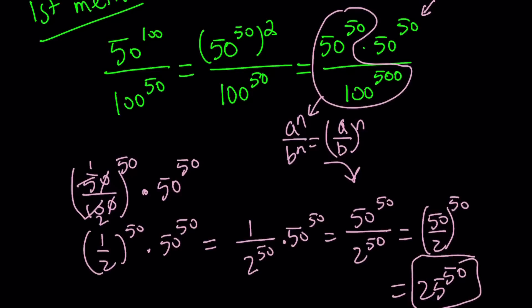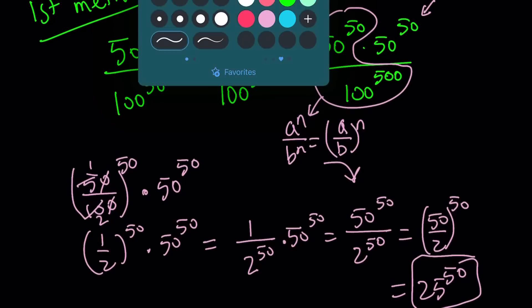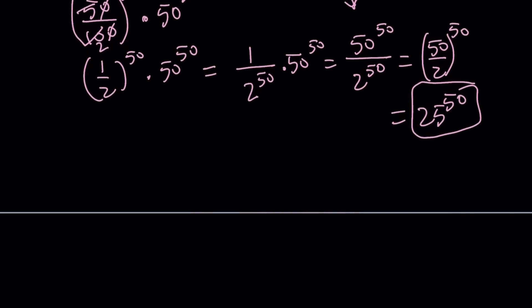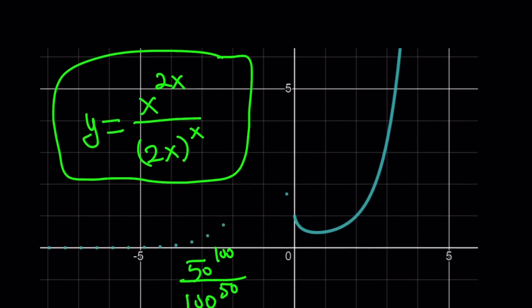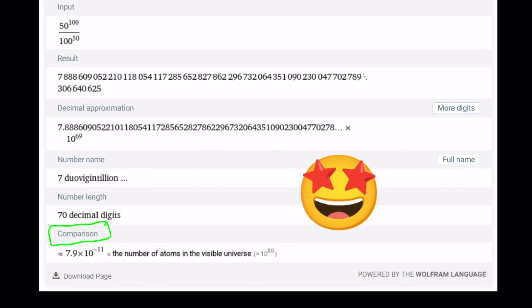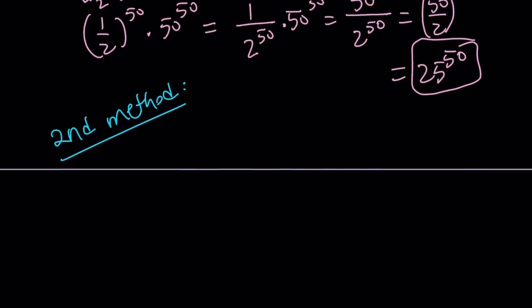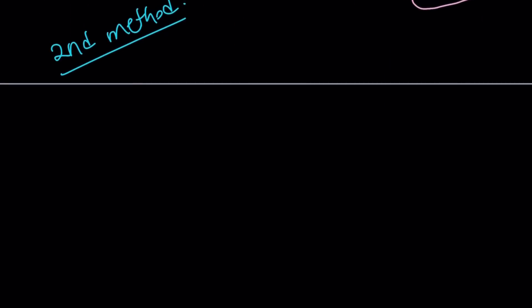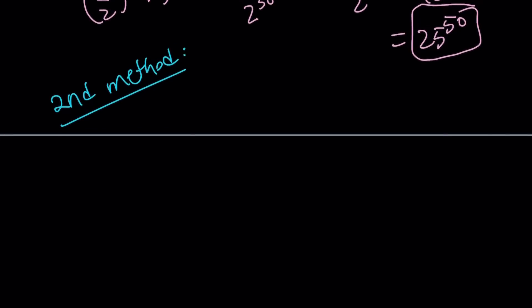But don't leave yet because we're going to do the second method. And we're also going to talk about the general formula or the function whose graph you've seen. And if you haven't seen it, this is the graph. This is the Wolfram Alpha result, which is kind of cool. Like the result is about 7 duovigintillion. And this also tells you that the numerator is larger, because you got a number greater than 1. Much greater than 1.